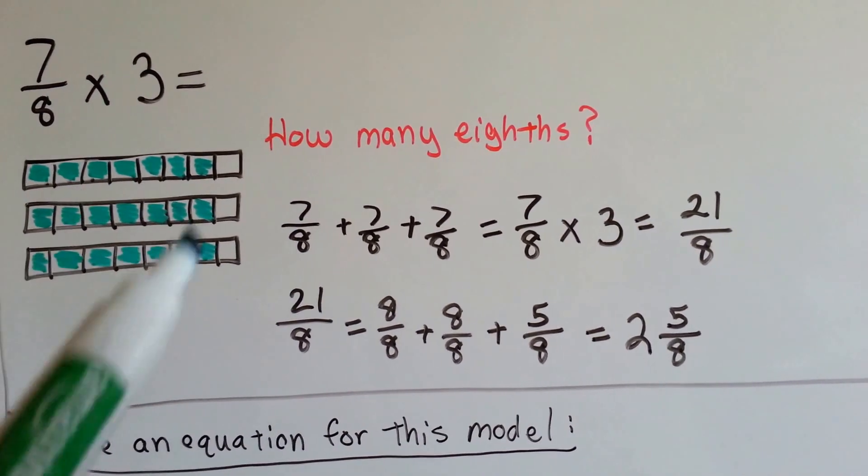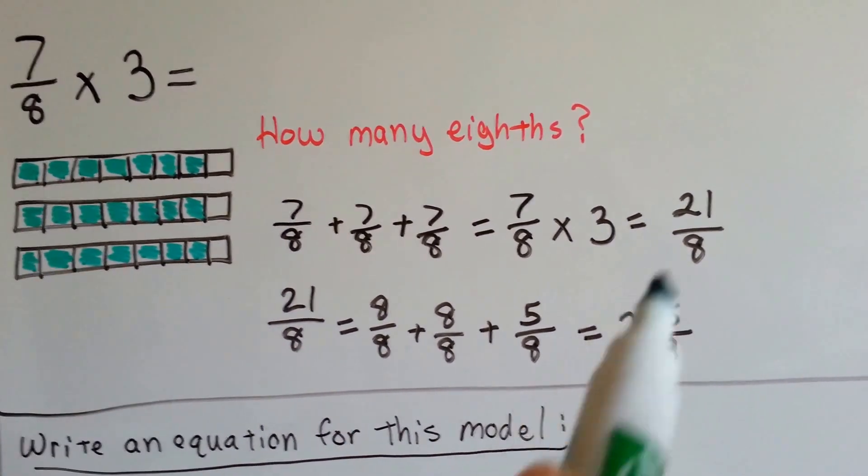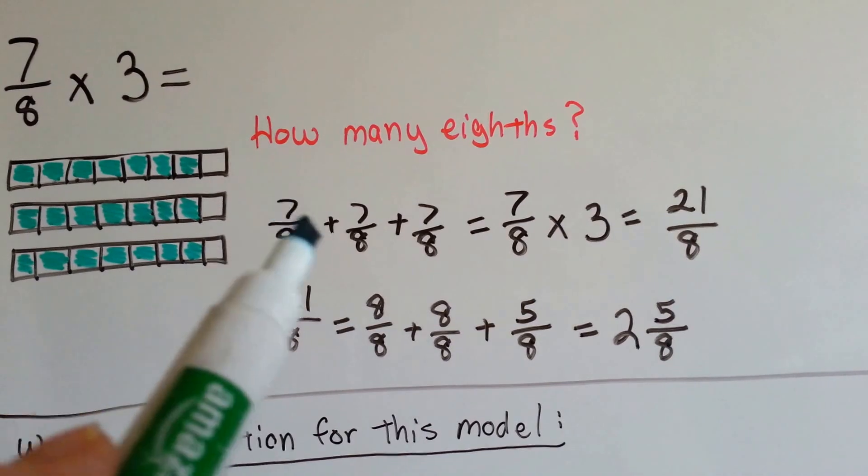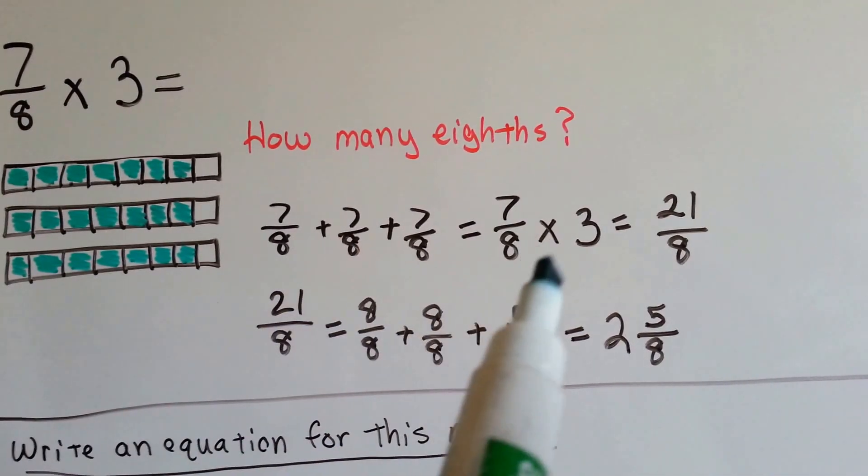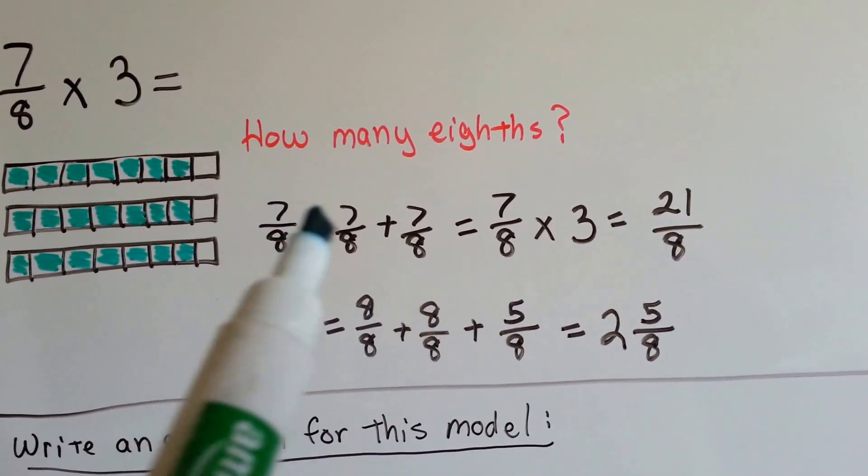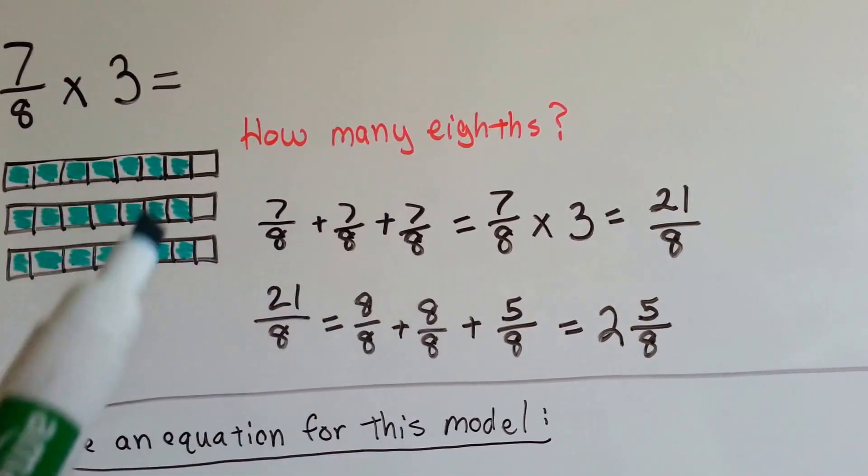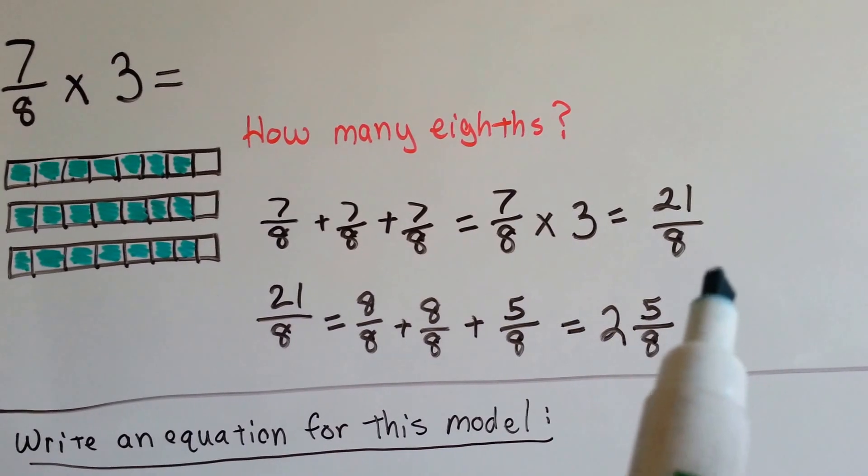We count the number of green boxes, and we get 21. Seven-eighths and seven-eighths and seven-eighths—that's basically what we're doing. It's the same thing as seven-eighths times three. We count the numerators, or the green boxes, and get 21-eighths.